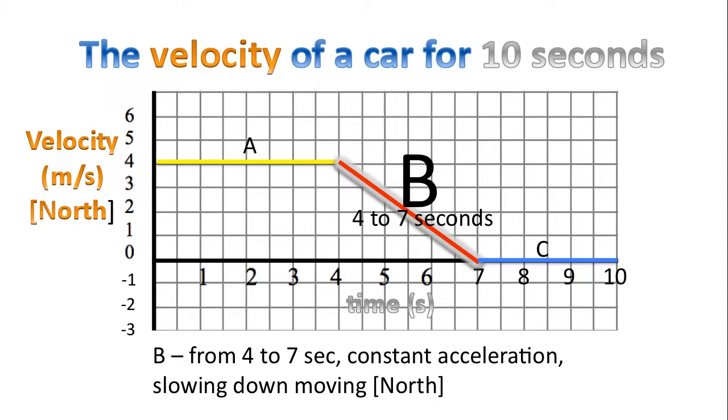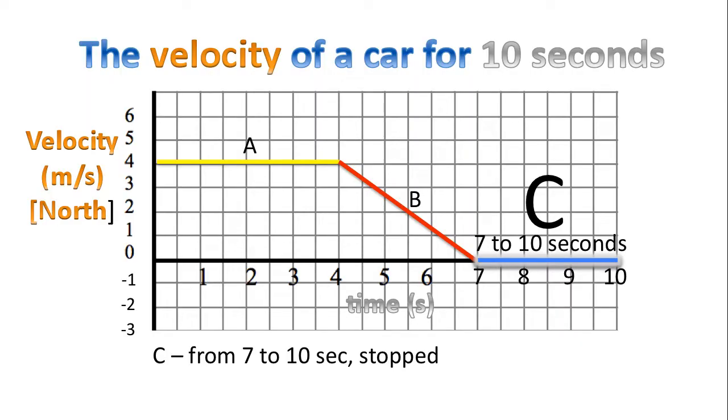For section B, because a line is drawn, this represents constant acceleration. In fact the car in this case is slowing down moving north. And finally for section C from 7 to 10 seconds the car is stopped.